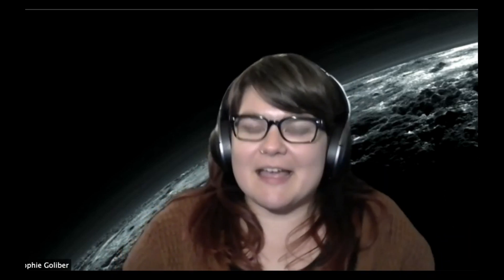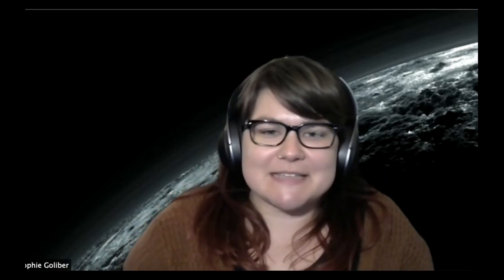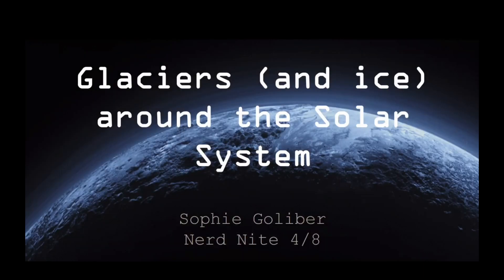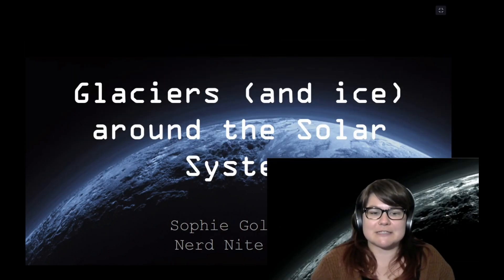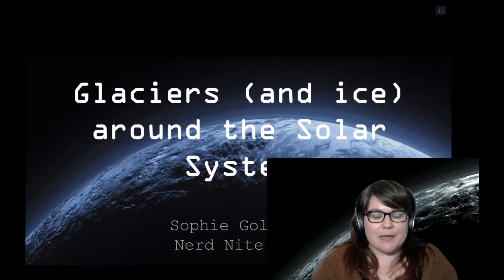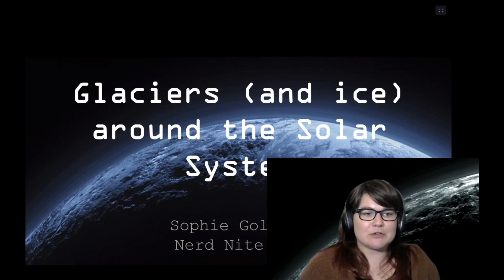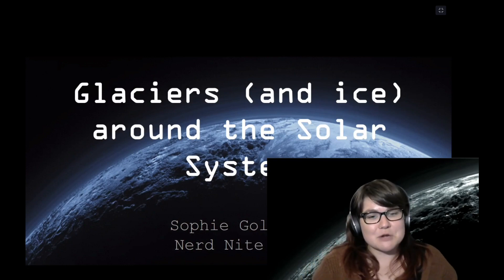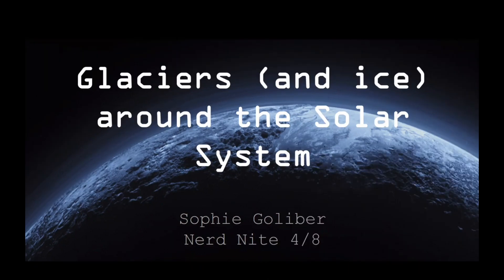I'm Sophie, and I'll be talking about glaciers and ice around our solar system. This is one of my favorite pictures from the solar system — a picture of Pluto — and you can see it has a really nice blue atmosphere. Before we start, I just want to say a big thank you to the organizers. I know it's quite difficult to get everything up and running online, but I really appreciate this opportunity and I'm excited to talk today.